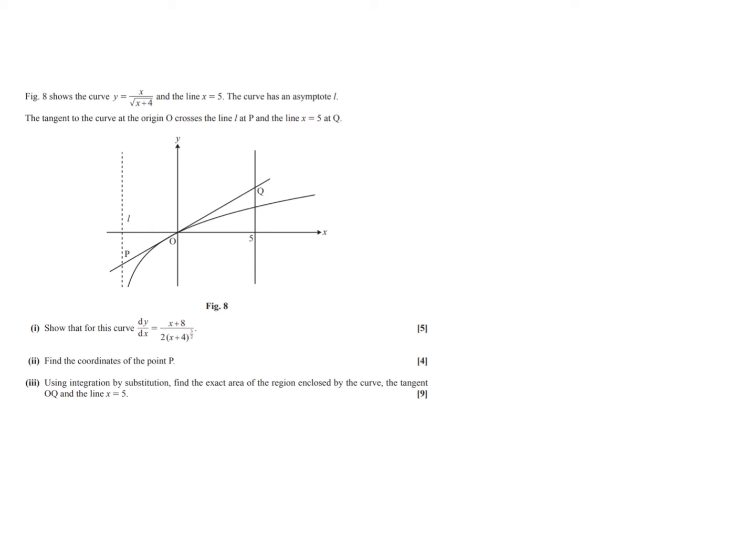So we now have a more extensive question with multiple parts. We have the curve y equals x over the square root of x plus 4, and the line x equals 5. The curve has an asymptote L, which you can see dotted on the left. The tangent to the curve at the origin crosses the line L at P, and the line x equals 5 at Q. Part 1: we've got to show that dy by dx is given by the result shown here. So the first part is all about differentiation.